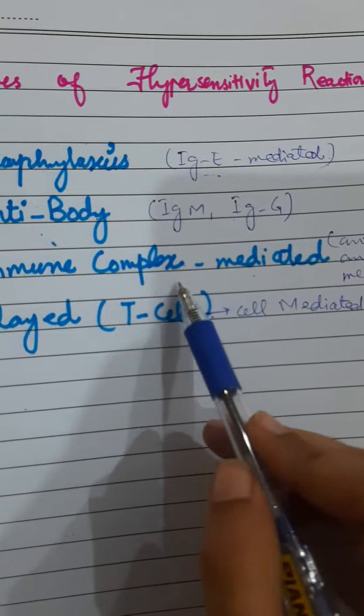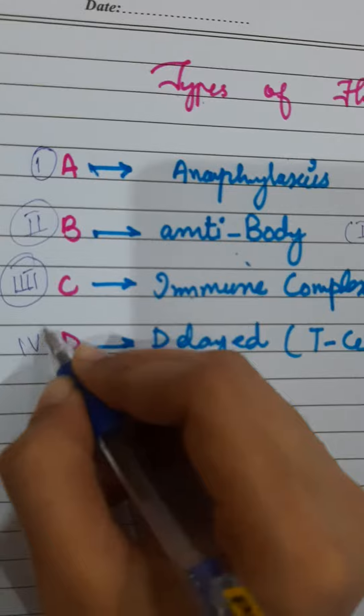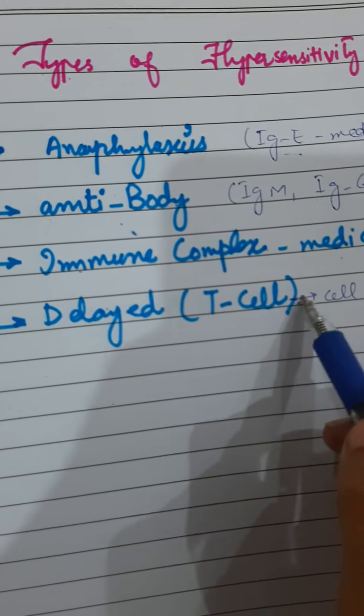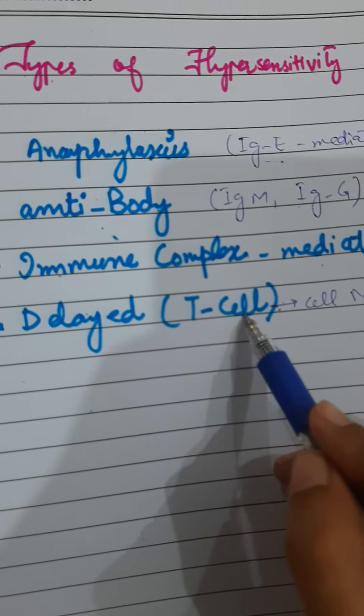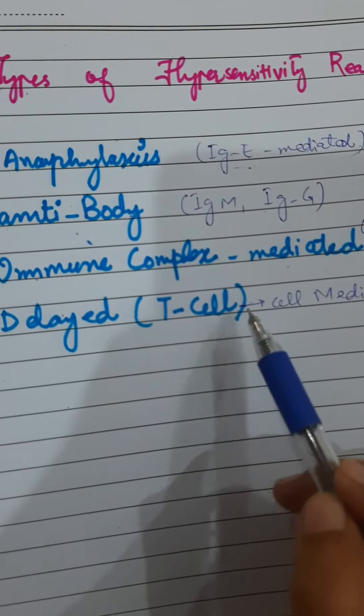Type 4 is delayed reaction, which is mediated by T cells. It's also called cell mediated hypersensitivity reaction and it occurs mostly in allergic contact dermatitis and tuberculosis.